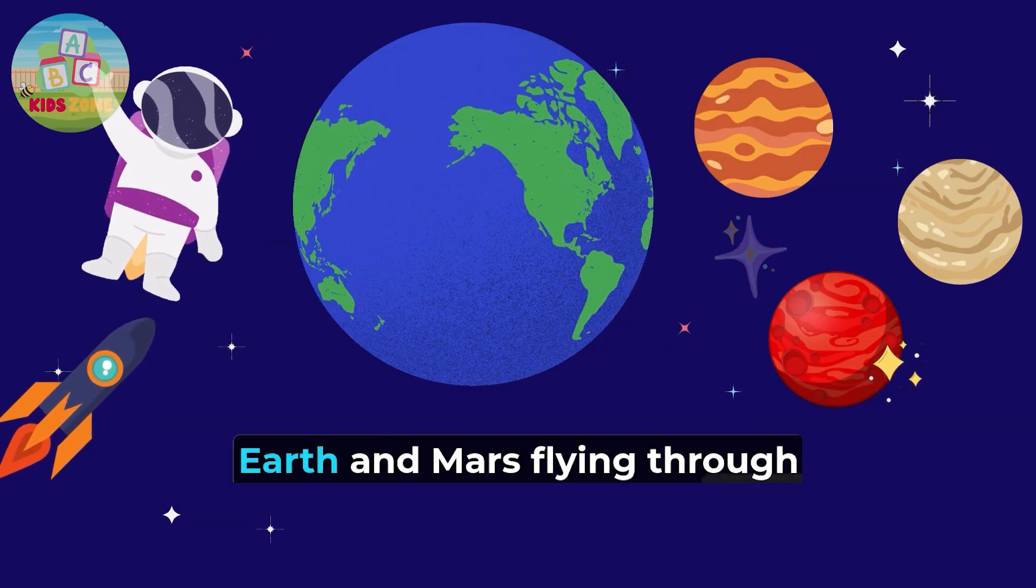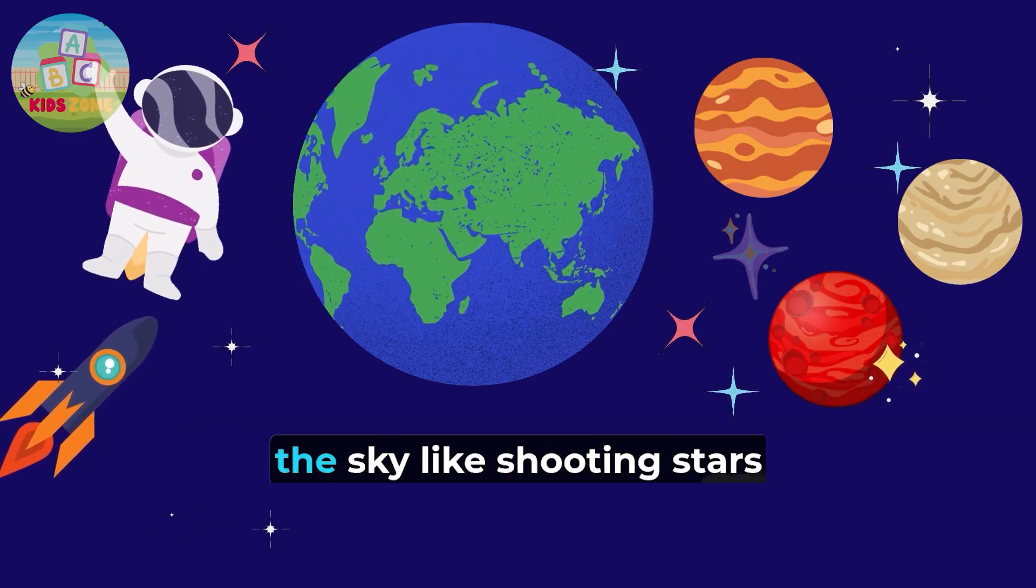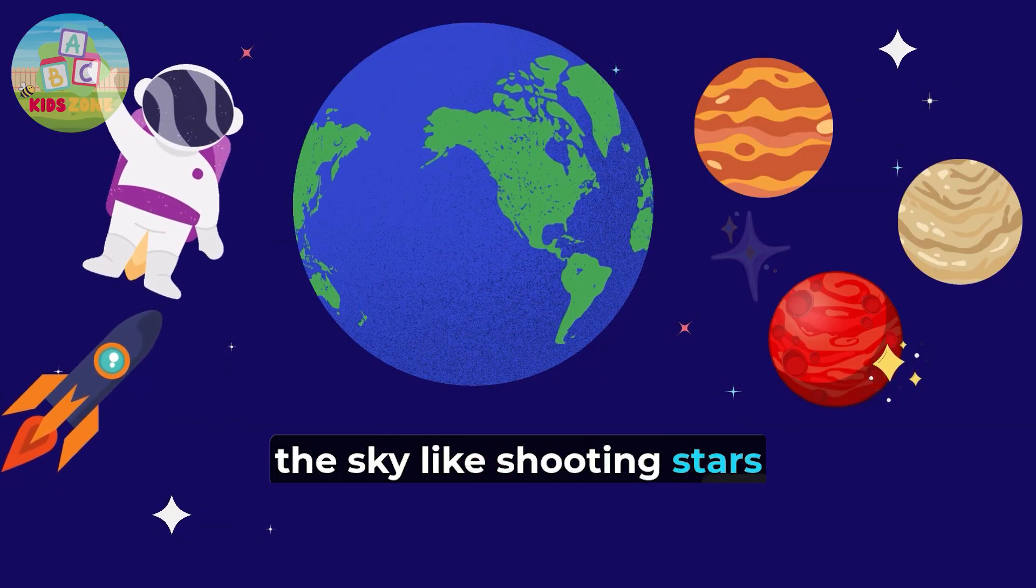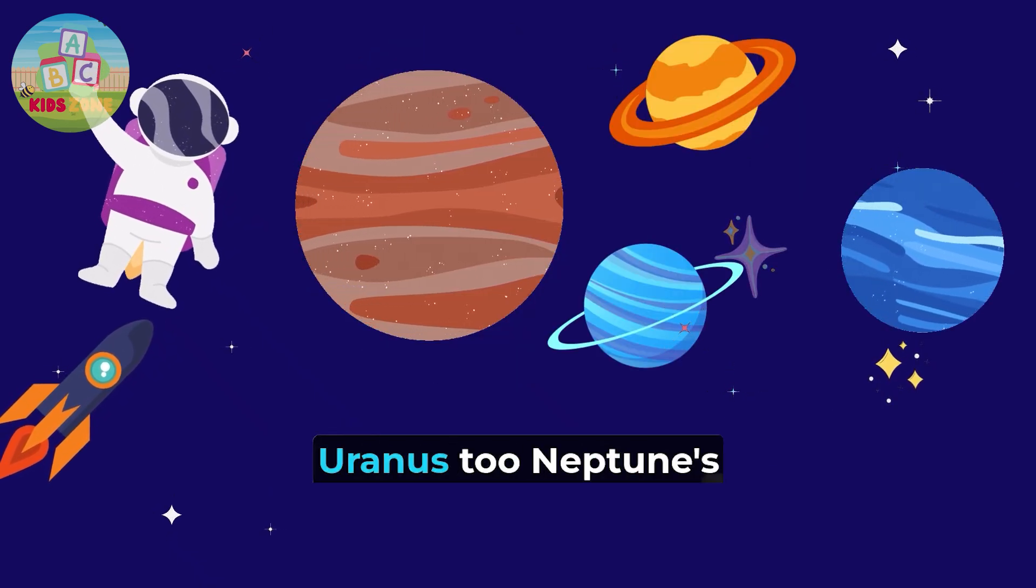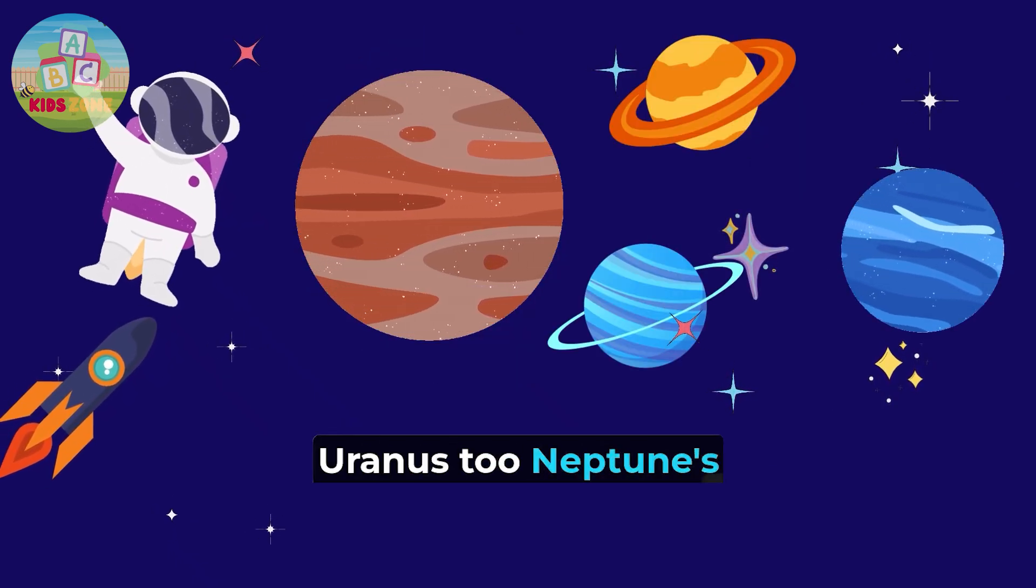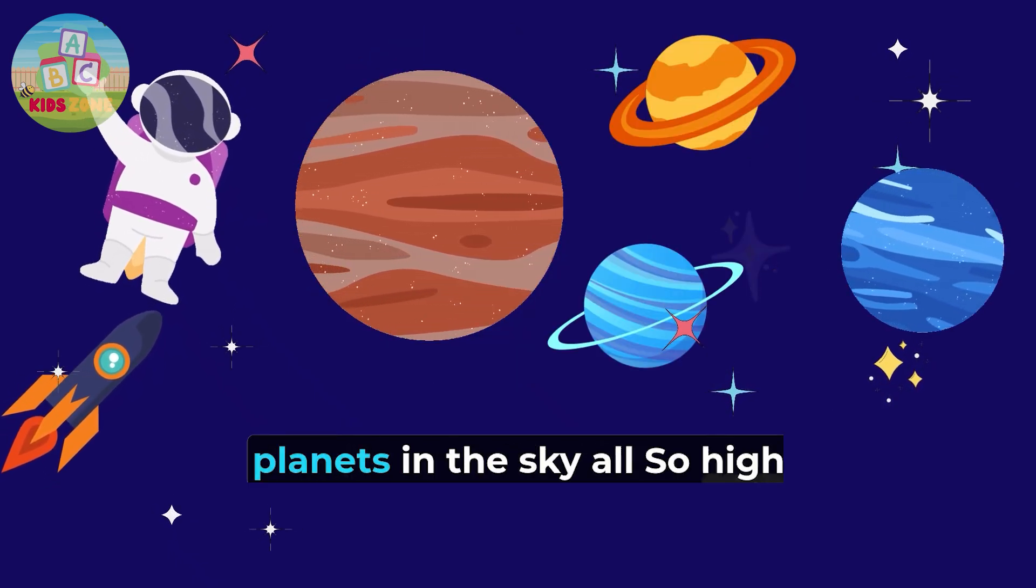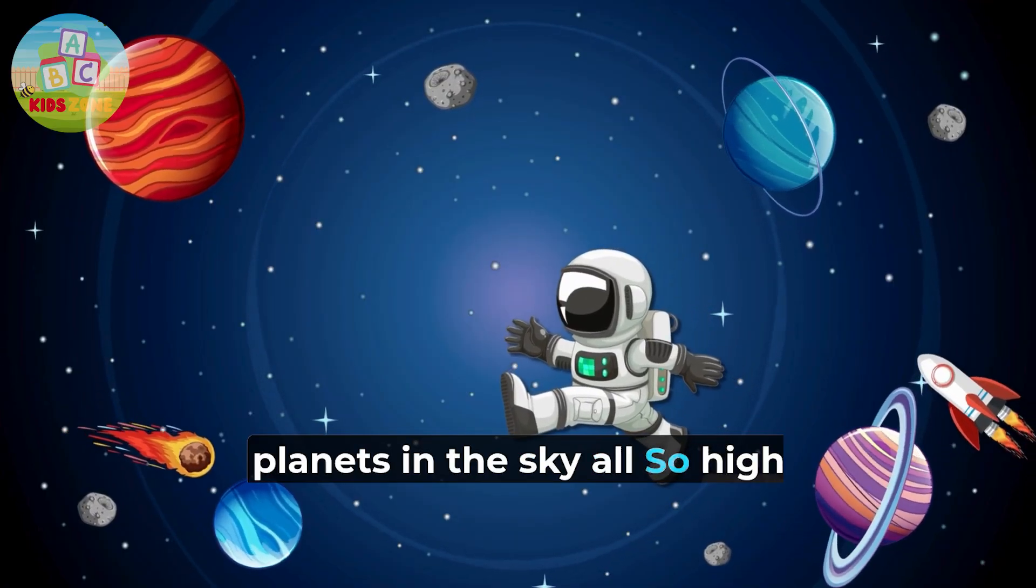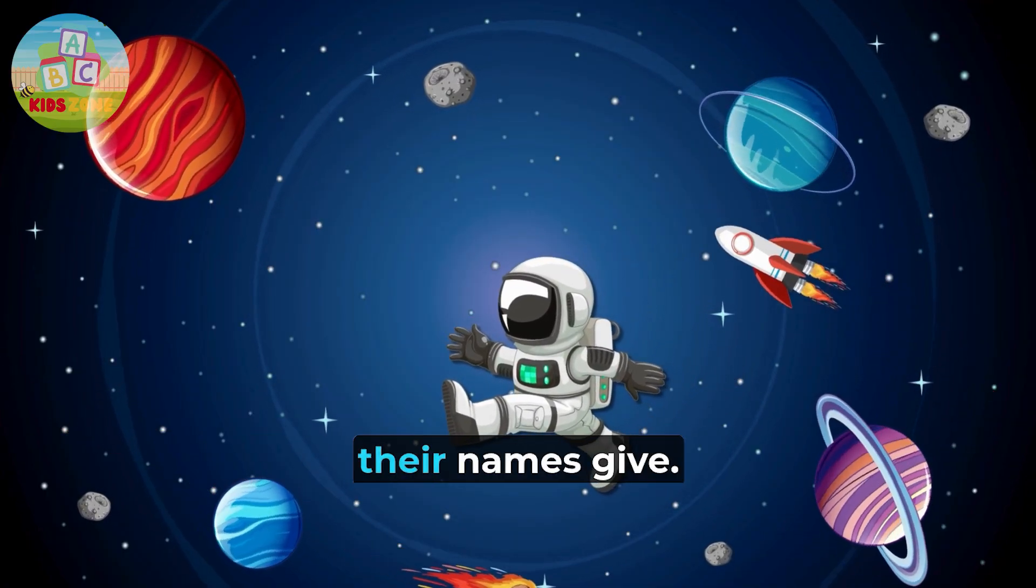Mercury, Venus, Earth and Mars flying through the sky like shooting stars. Jupiter, Saturn, Uranus too, Neptune's the last all in a crew. Planets in the sky all so high, let's learn their names.